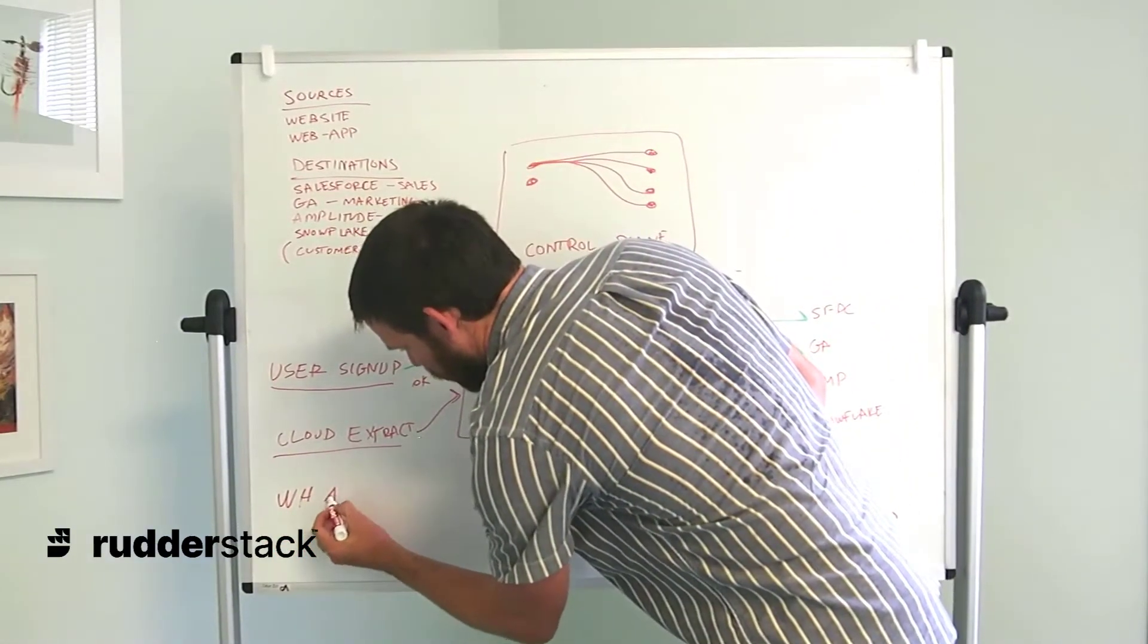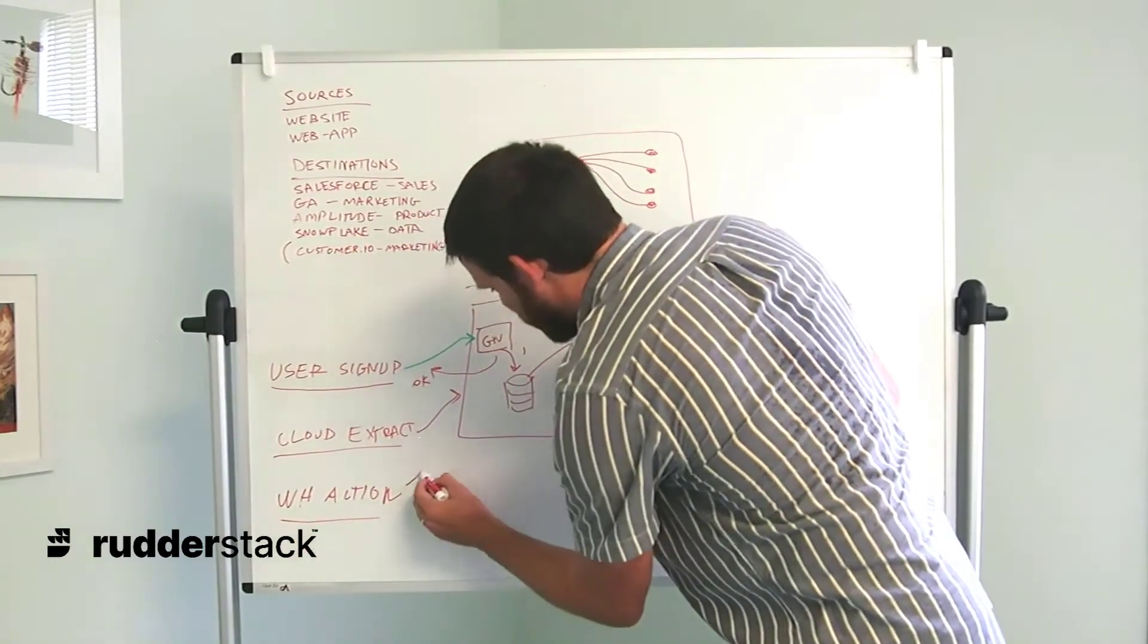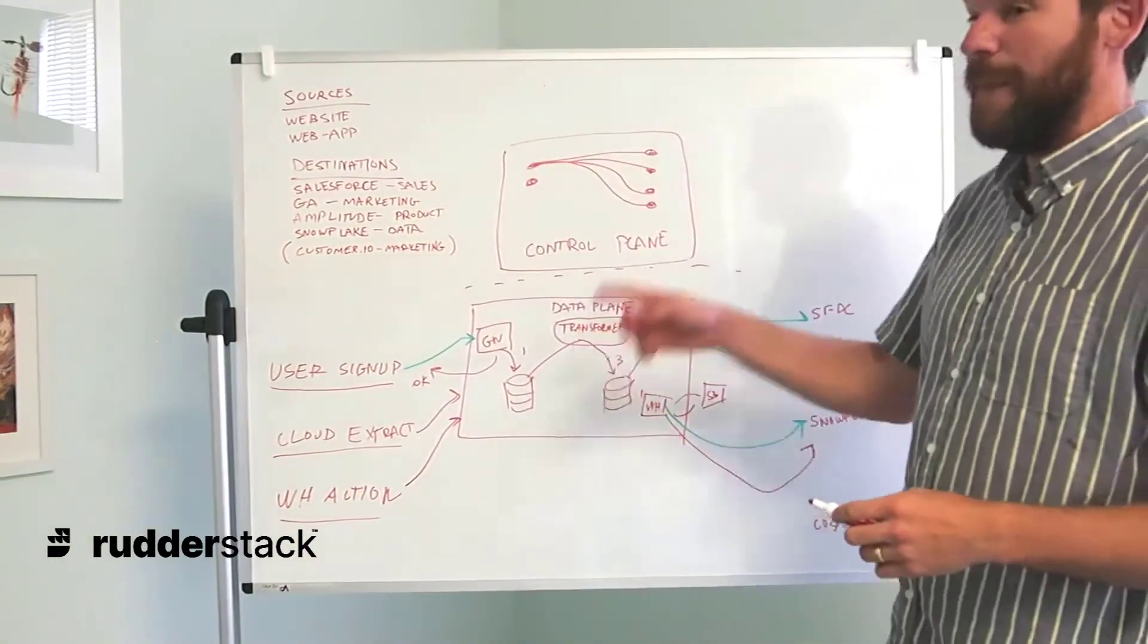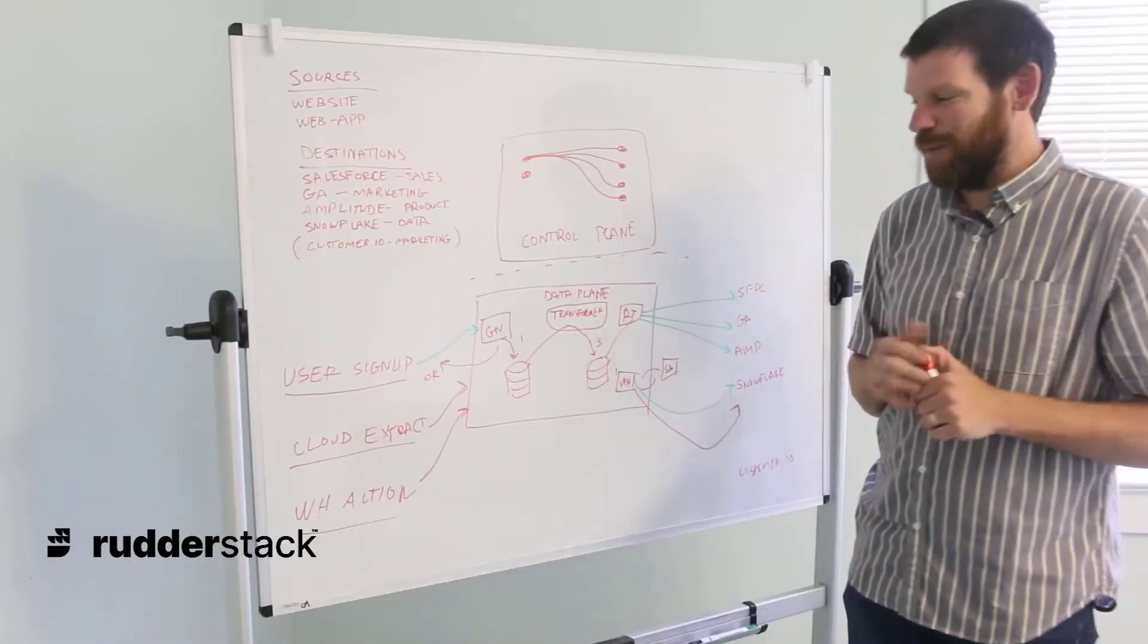Warehouse Actions is Rudderstack's reverse ETL tool, which sends data from your warehouse back through Rudderstack and then to your downstream destinations. This could look like a number of things.